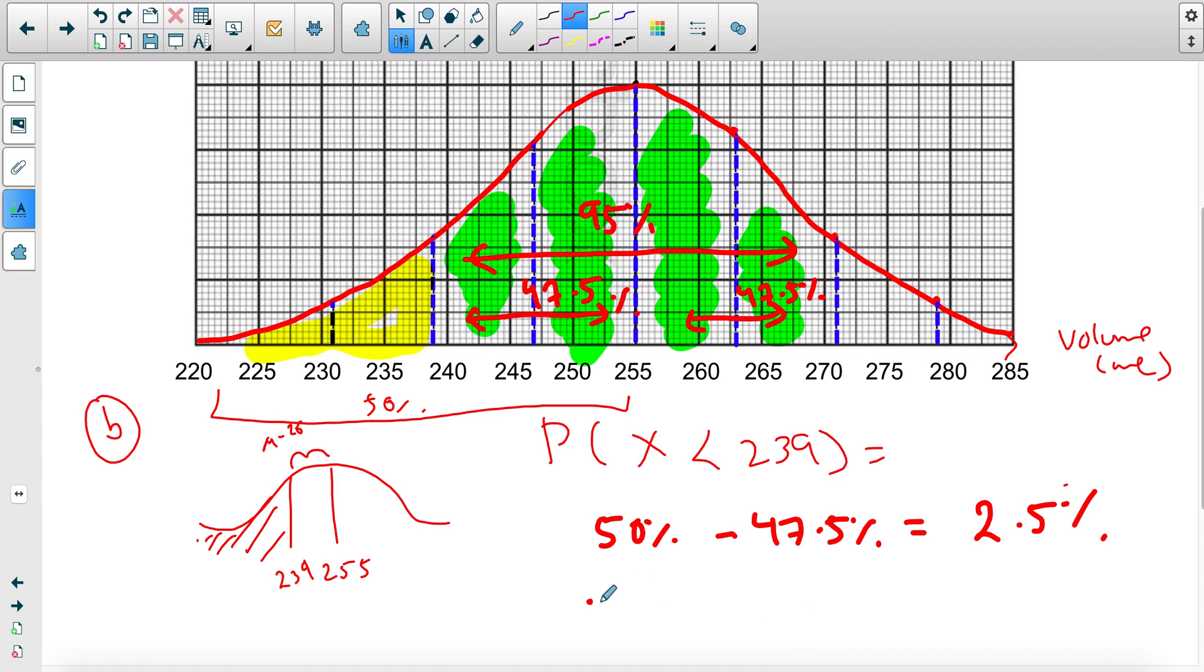From this 50%, I'm removing the 47.5%, which should give me 2.5%. Because it's probability, you need to write it as decimals. So 2.5% is 2.5 by 100, which is 0.025. This tells you that the probability of picking a packet that has less than 239 milliliters is 0.025, which makes sense because the mean was at 255.